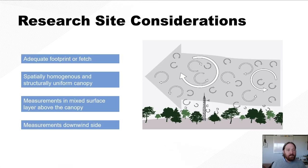Some of these include making sure that you have adequate footprint or fetch, that you have a spatially homogeneous and structurally uniform canopy, which is important for some assumptions that we make in the eddy covariance theory and in the derivation of the terms for the vertical flux, and then also measurements that are being made in mixed surface layer above the canopy to ensure that we're in what's called the constant flux layer.